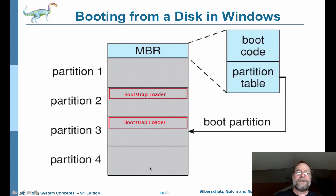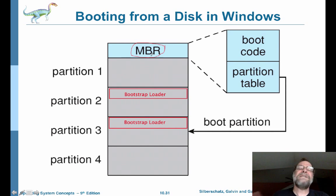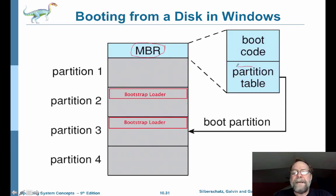Here's how it works in Windows. The lowest-level sectors of the hard drive store what's called the MBR — the Master Boot Record. That basically consists of boot code and a table defining the different partitions that have been set up on the hard drive previously — those logical partitions we talked about.